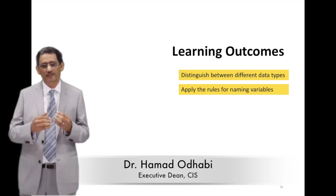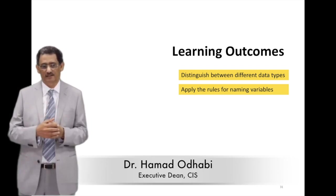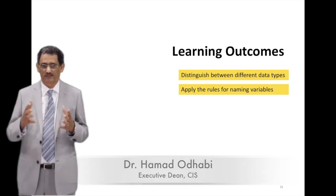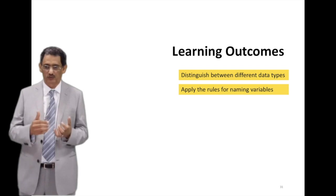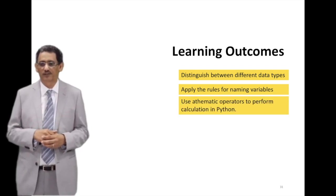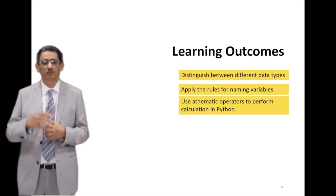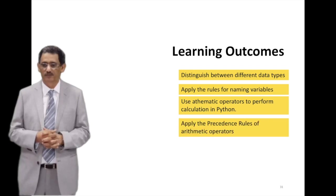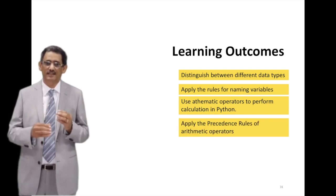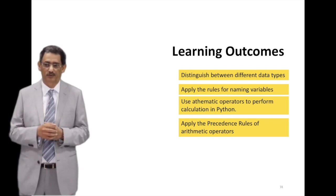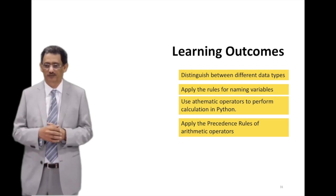Then how we apply the rules of naming data types. If you want to give a name to a variable, what are the rules that you will follow? Then you will use mathematical or arithmetic operations to perform calculations on the variables. And then we need to understand the sequence - which arithmetic operator has more priority, which one we do first.